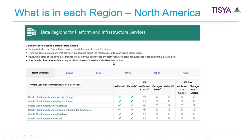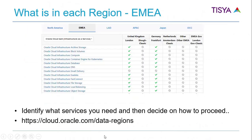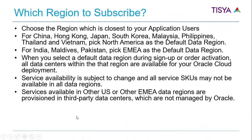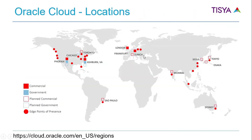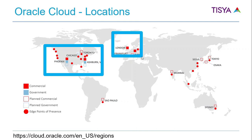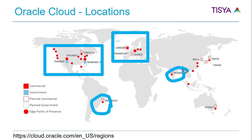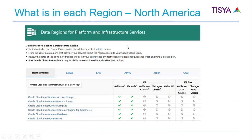OCI is the latest offering and it is not available everywhere. So when you need to identify what service you're going to subscribe to, first identify where it is available, then pick it up. Now, which region should you subscribe to? OCI is available right now only in North America and Europe. If a customer is based in Brazil or Mumbai, they don't have OCI locally nearby, so you need to choose the nearest location to where your users are.